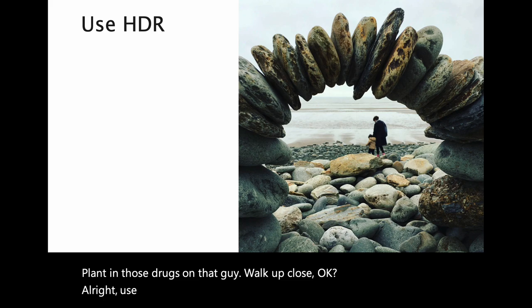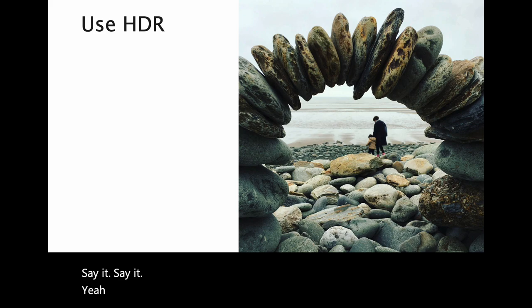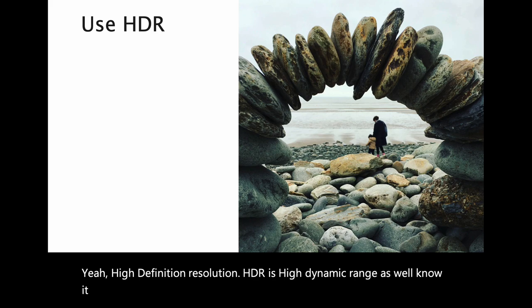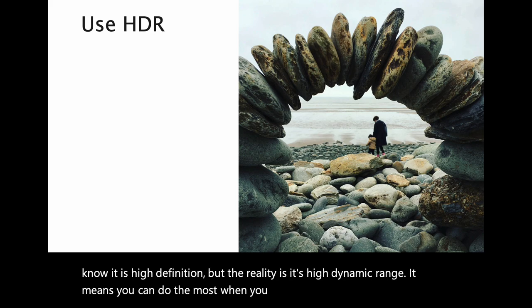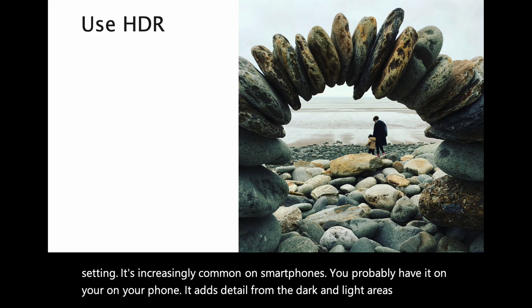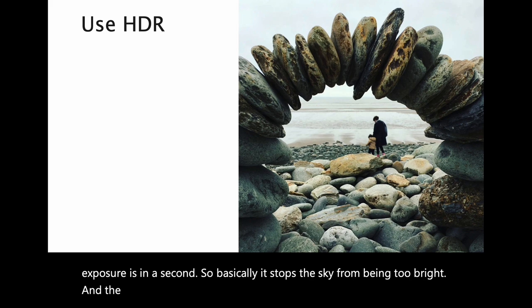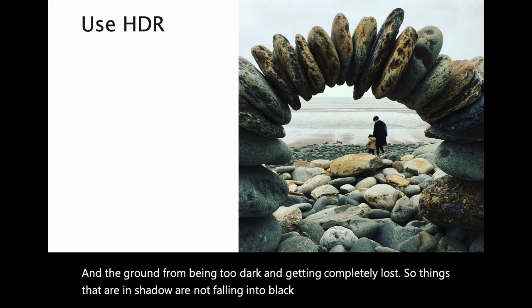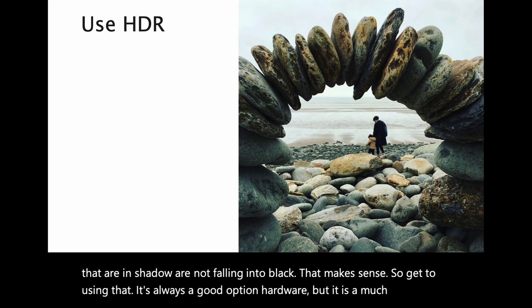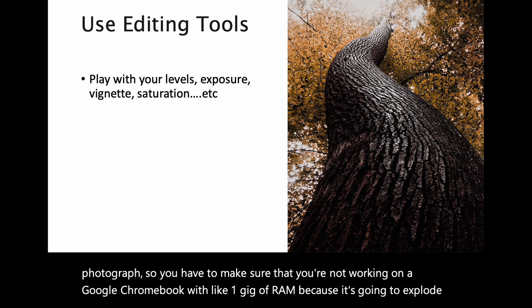Use HDR. What does HDR stand for? It's high dynamic range. It means you can get the most when you shoot with that setting. It's increasingly common on smartphones. HDR adds detail from the dark and light areas and provides a really balanced exposure level — it stops the sky from being too bright and the ground from being too dark. Things in shadow are not falling into black. It is a much bigger photograph though, so make sure you're not working on a low-RAM device.